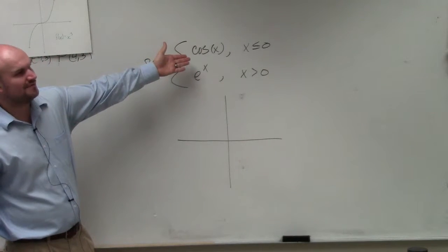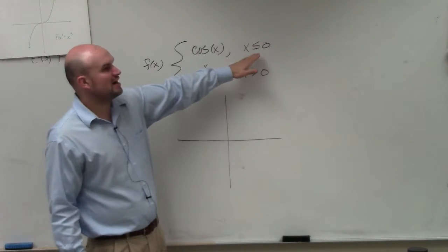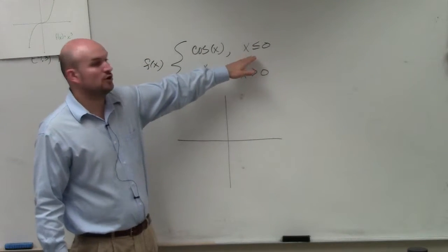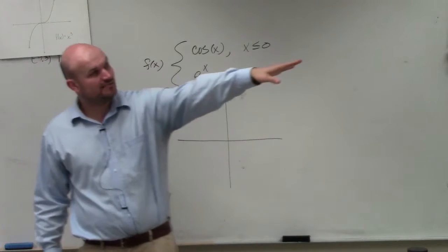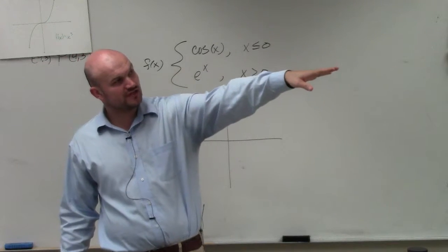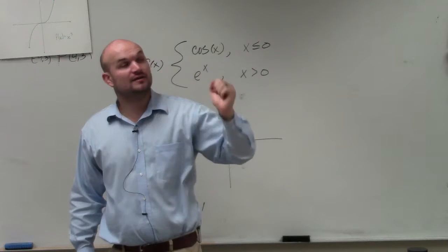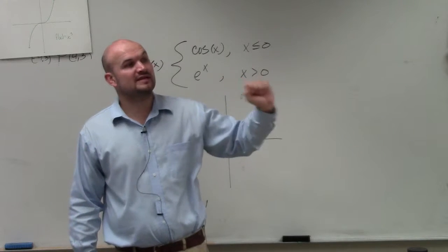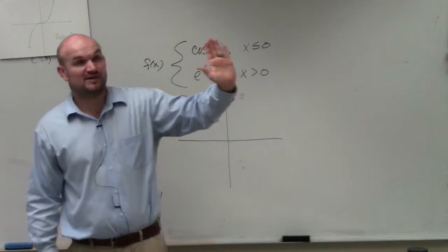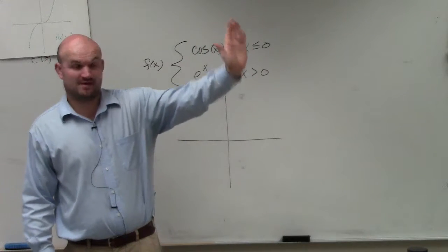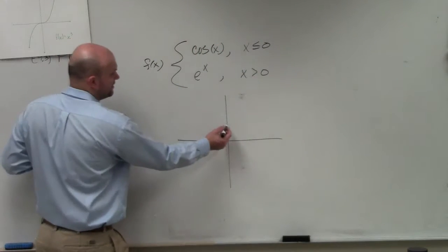So the first thing is I can just graph the cosine of x. This is saying graph cosine of x for only x values that are less than 0. If you guys look at my cosine function over there, that's for all values of x — I only want to graph it for the x values that are less than 0. So therefore, from the y-axis to the left, I'm going to graph the function.